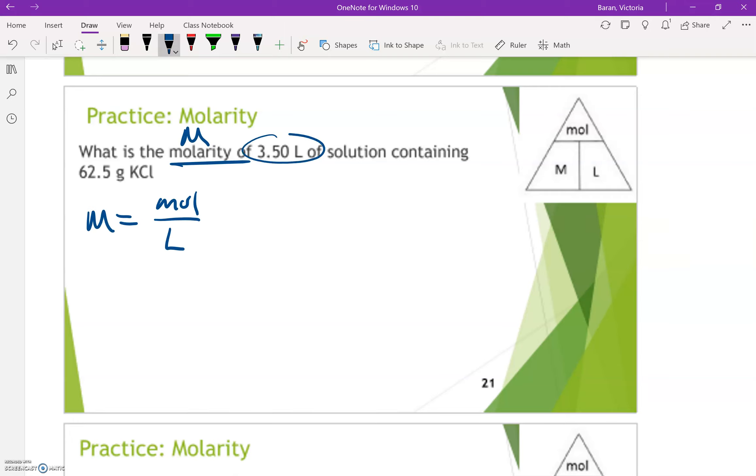If we have 3.50 liters, so we know that 3.50 liters will go in the bottom. But instead of moles this time, they're giving us grams. We can use molar mass and that is how we're going to convert grams into moles.